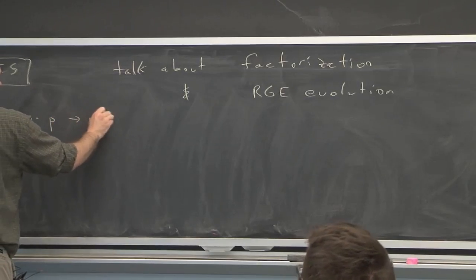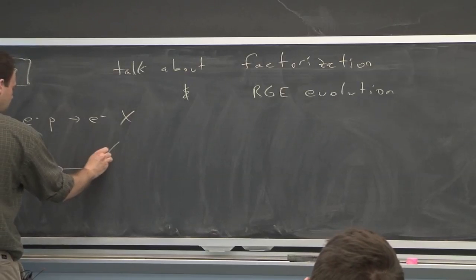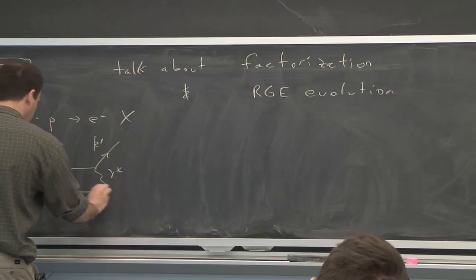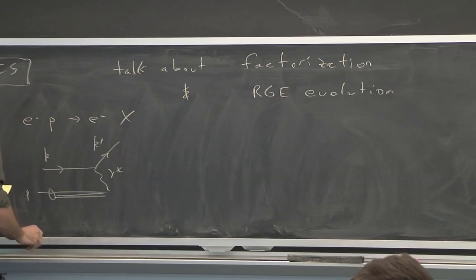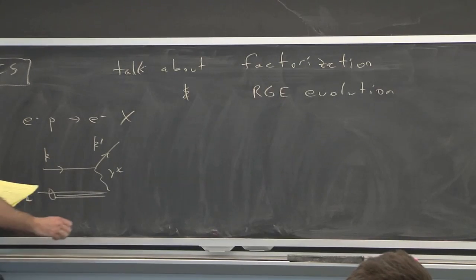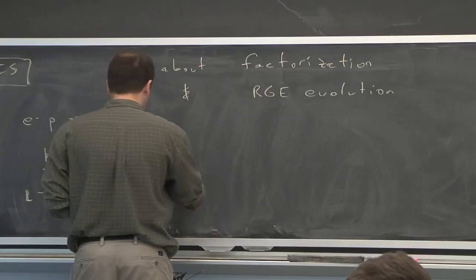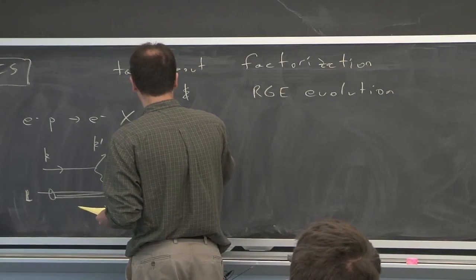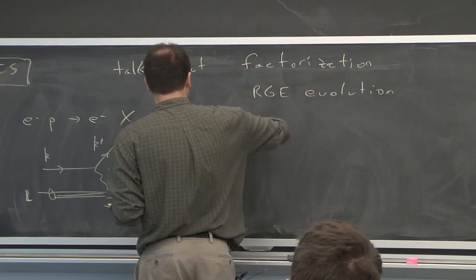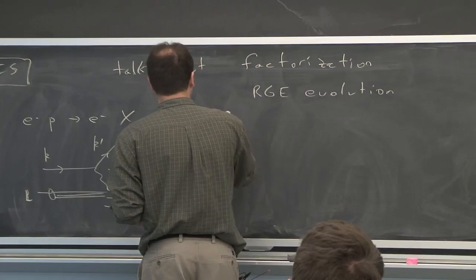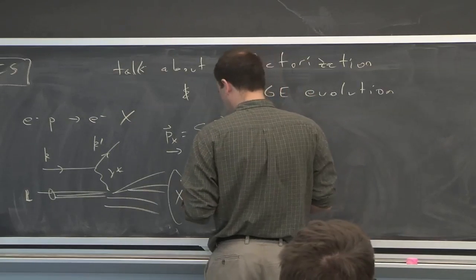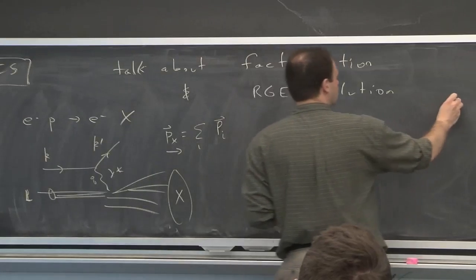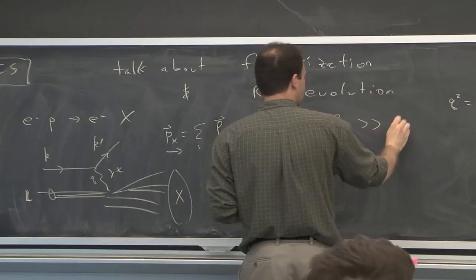So DIS is electron proton to electron anything. So just kinematics. If you think about a virtual photon exchange, proton comes in. I'll say that the proton's momentum is a capital P. Gets blown apart. Call the stuff that's blown apart P_x. And so P_x is the sum of all the particles, all the final state hadrons. Q squared of the virtual photon. So this is Q. Little q squared is minus capital Q squared. And this thing is much bigger than lambda QCD.